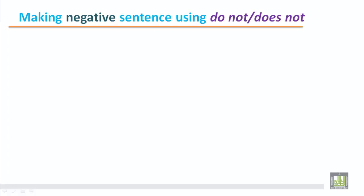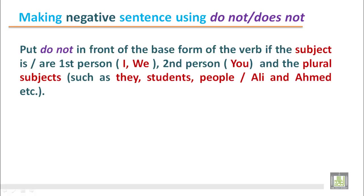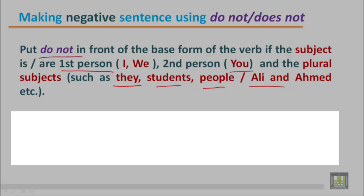Making negative sentences using do not or does not. Put do not in front of the base form of the verb if the subject is first person such as I, we; second person you; and plural subjects such as they, students, people; and compound subjects like Ali and Ahmed, etc.